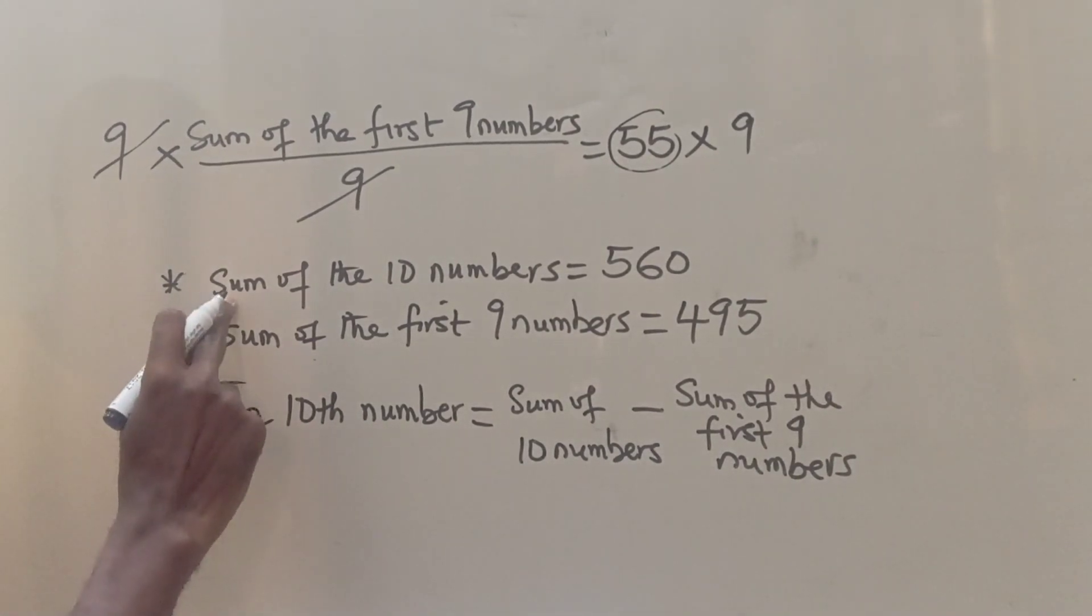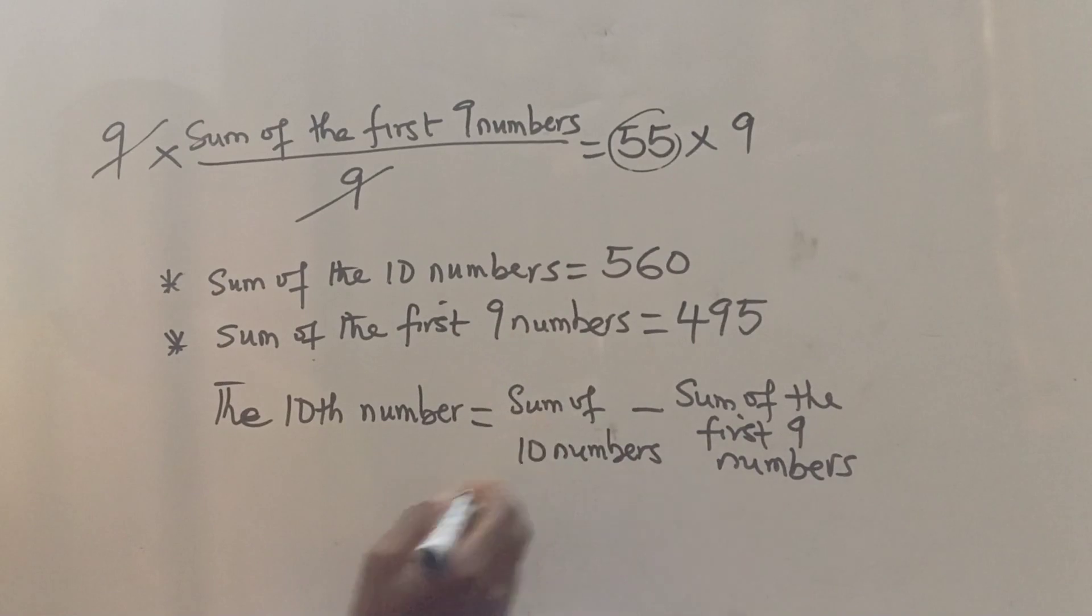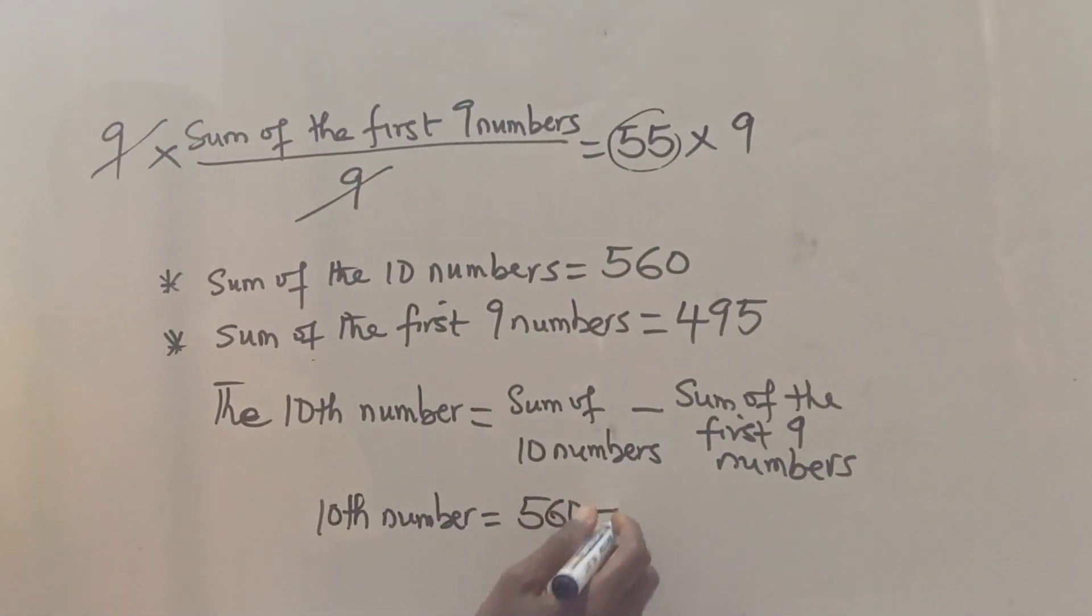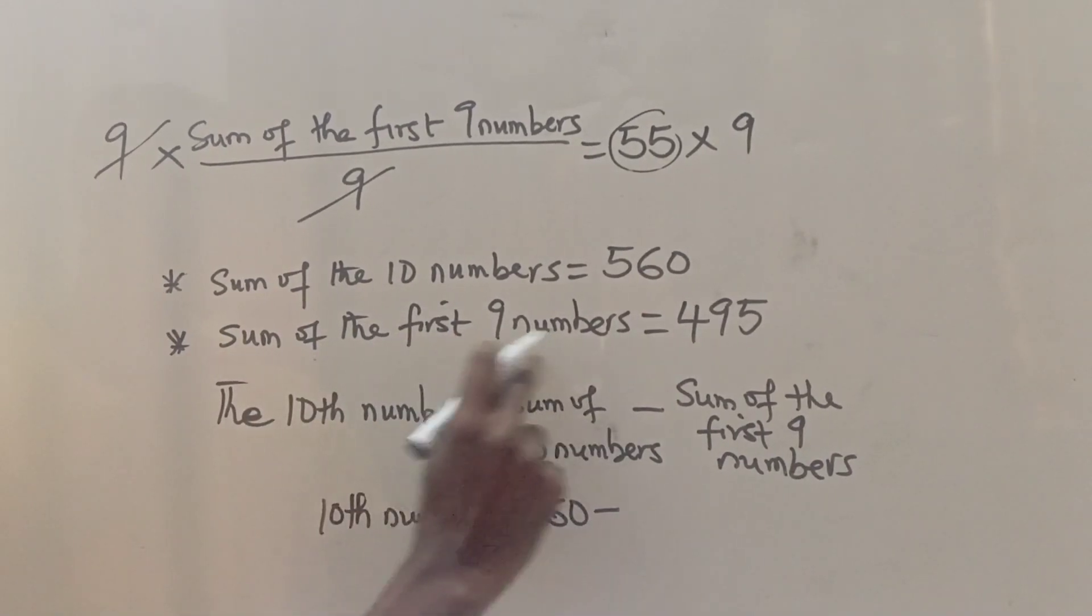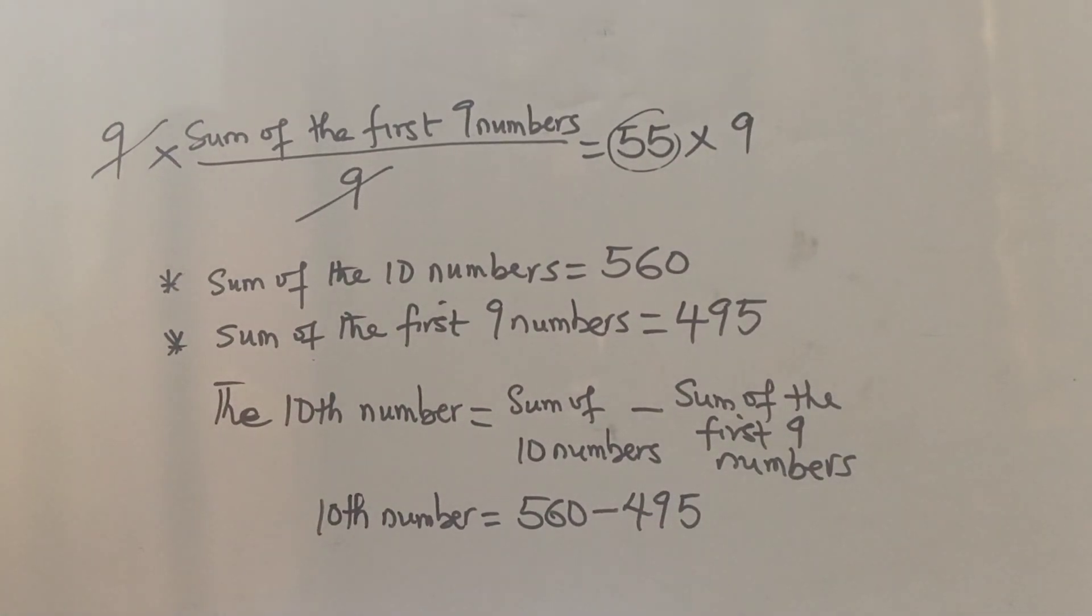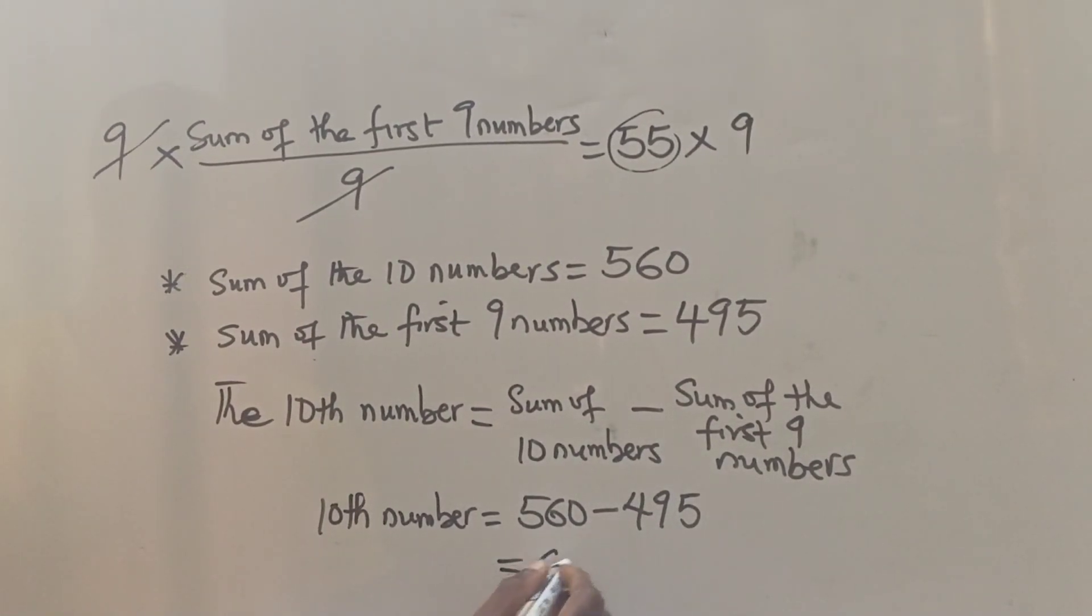Because when they added all 10 numbers, we have this. So the 10th number will be all the numbers added, which was 560, minus the first nine numbers, which were 495. So if we subtract that, we are going to get our answer as 65.